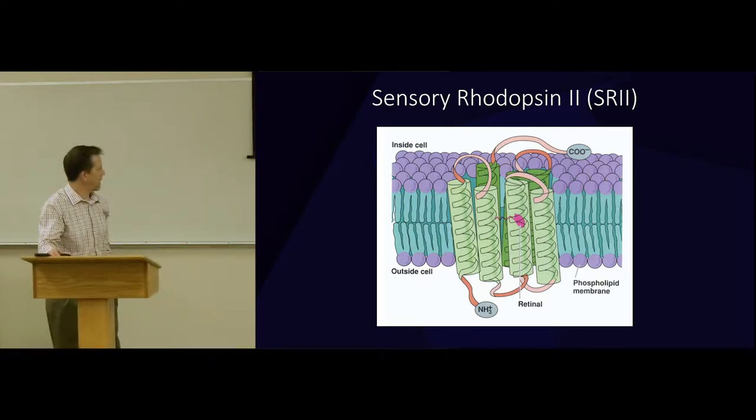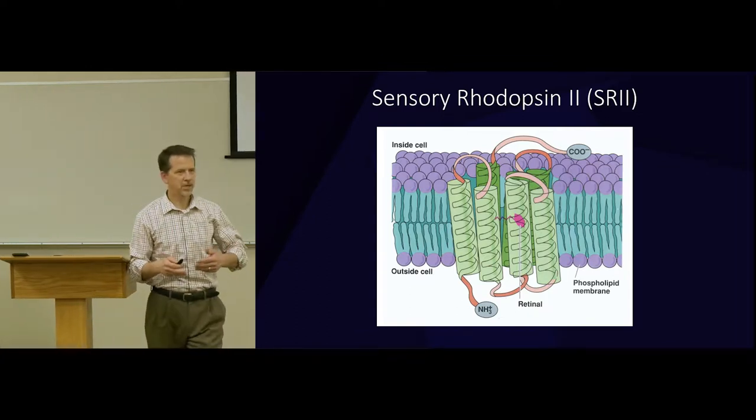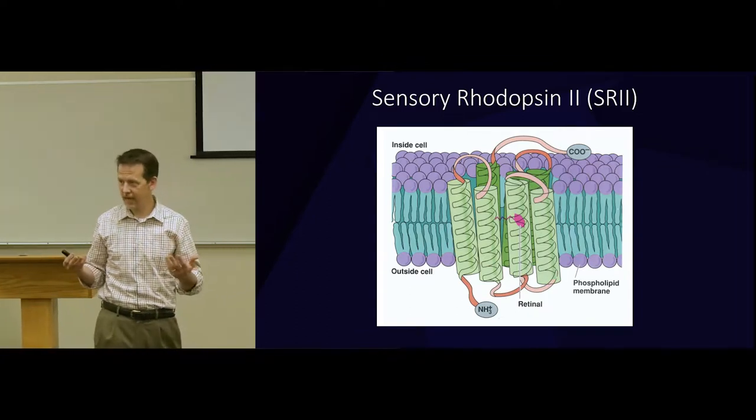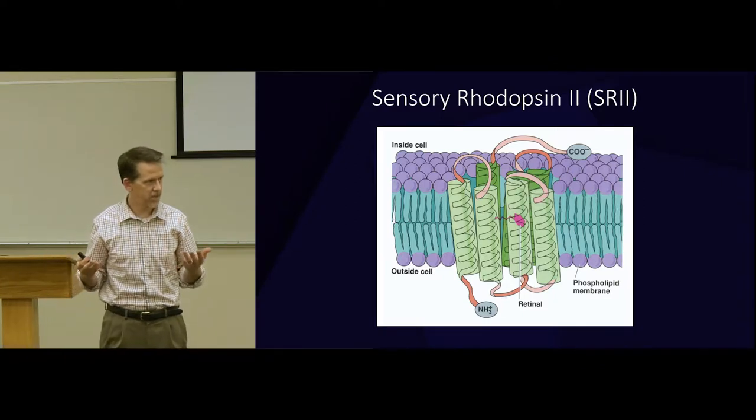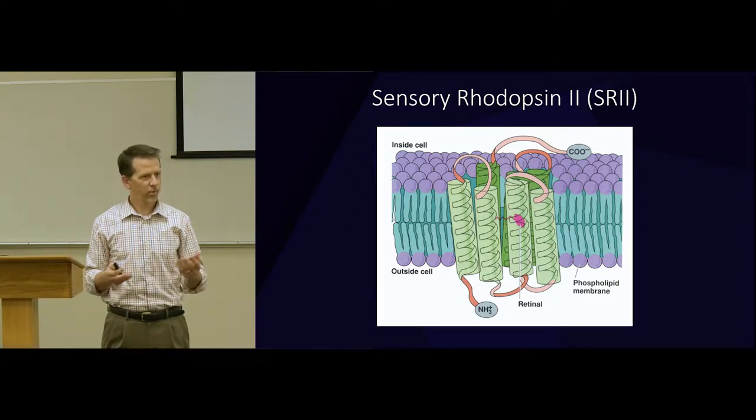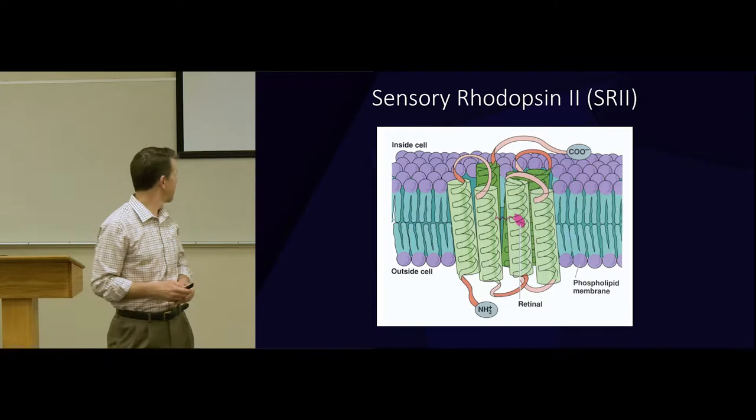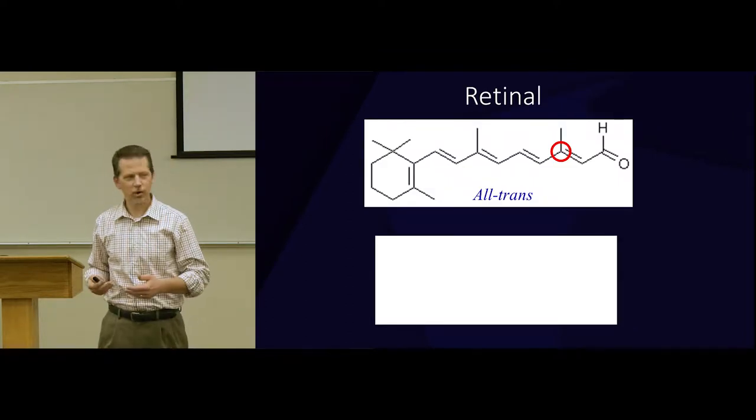It loops around and then comes back through again. And passes in and out of this membrane seven times. Buried in the middle of that protein is another little protein, here in pink, called retinol. And retinol has the unique ability to change shape when it gets hit by light. It changes the shape. You want to know what retinol looks like?